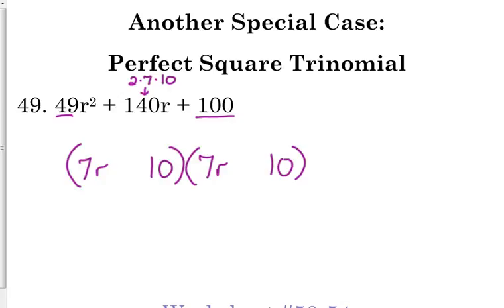But this time we don't want it to cancel. We don't have opposite signs. Notice that last sign is a plus, so that means they're the same. The first sign is also a plus, so that means for this one, both of them are pluses.